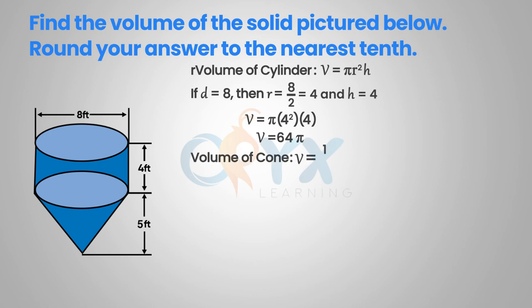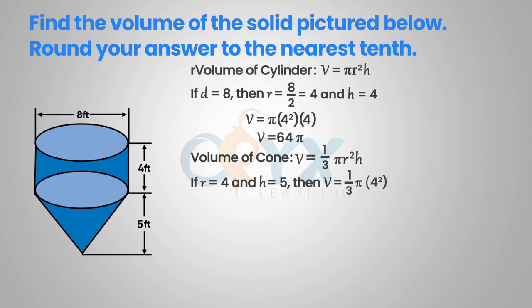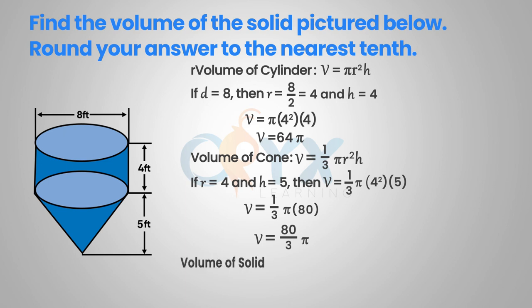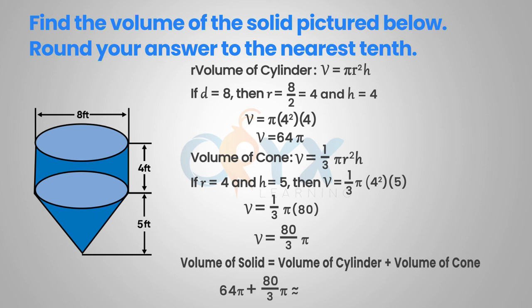The volume of the cone: V equals one-third pi R squared H. We can use the same radius as in the cylinder, which is 4, and the height of the cone is shown to be 5. Substituting those values in, we get V equals one-third pi times 4 squared times 5. Simplifying, we get V equals one-third pi times 80, and simplifying further, V equals 80 over 3 pi. Now that we have the volume of both the cylinder and the cone, we add the two volumes together. So the volume of the solid is 64 pi plus 80 over 3 pi, which is approximately 284.8 feet cubed.